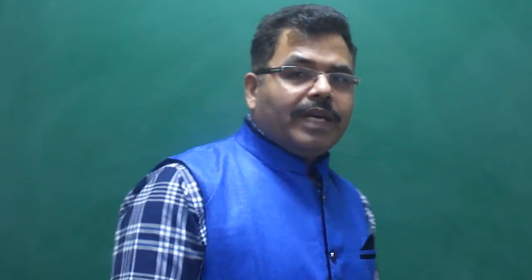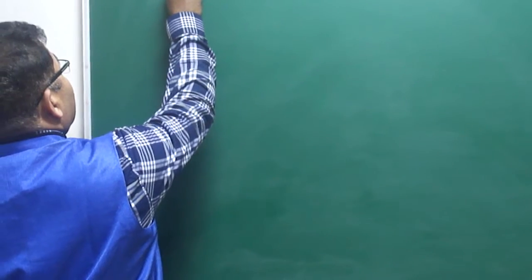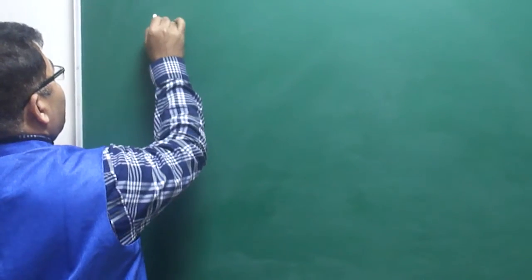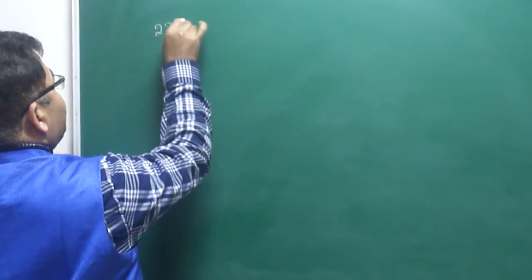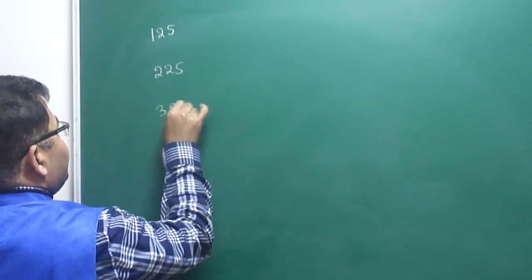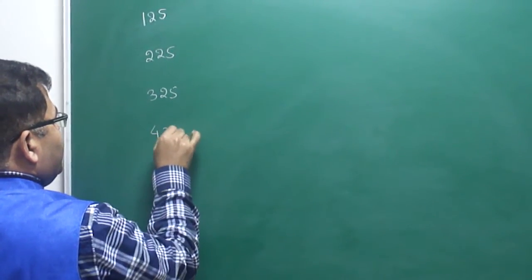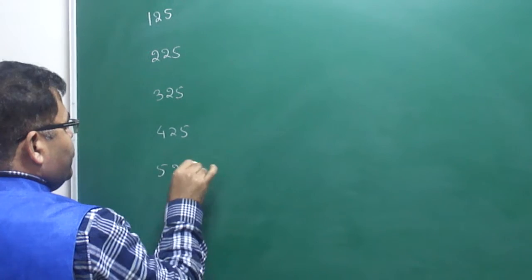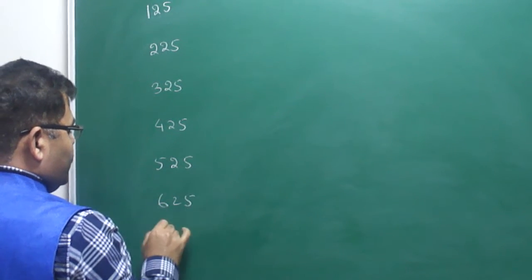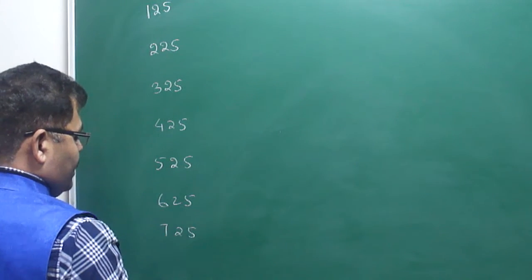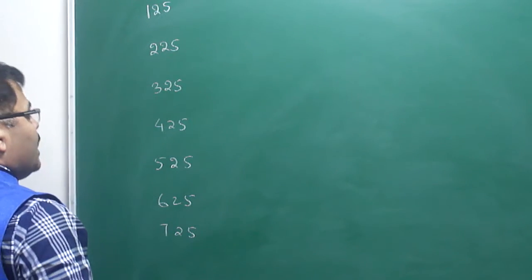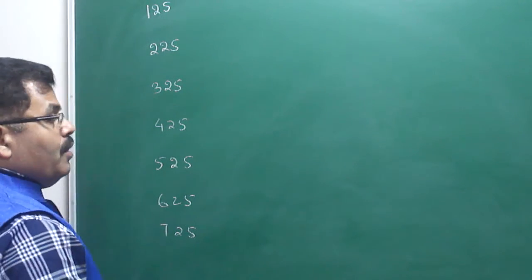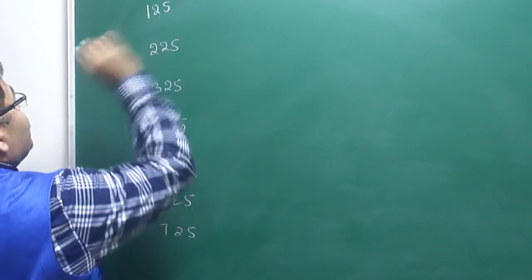Today we are going to discuss three-digit numbers of a particular type. If the last two digits of any number are 25 — for example, 125, 225, 325, 425, 525, 625, 725, etc. — these are the type of numbers in which the last two digits are 25.